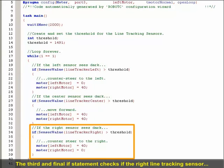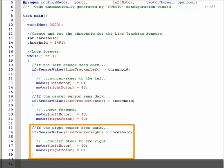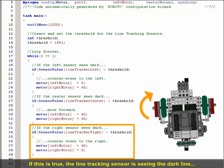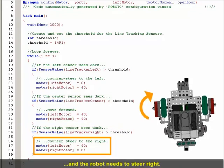The third and final if statement checks if the right line tracking sensor detects a value greater than the threshold. If this is true, the line tracking sensor is seeing the dark line, and the robot needs to steer right, which it does by performing a basic swing turn to the right.